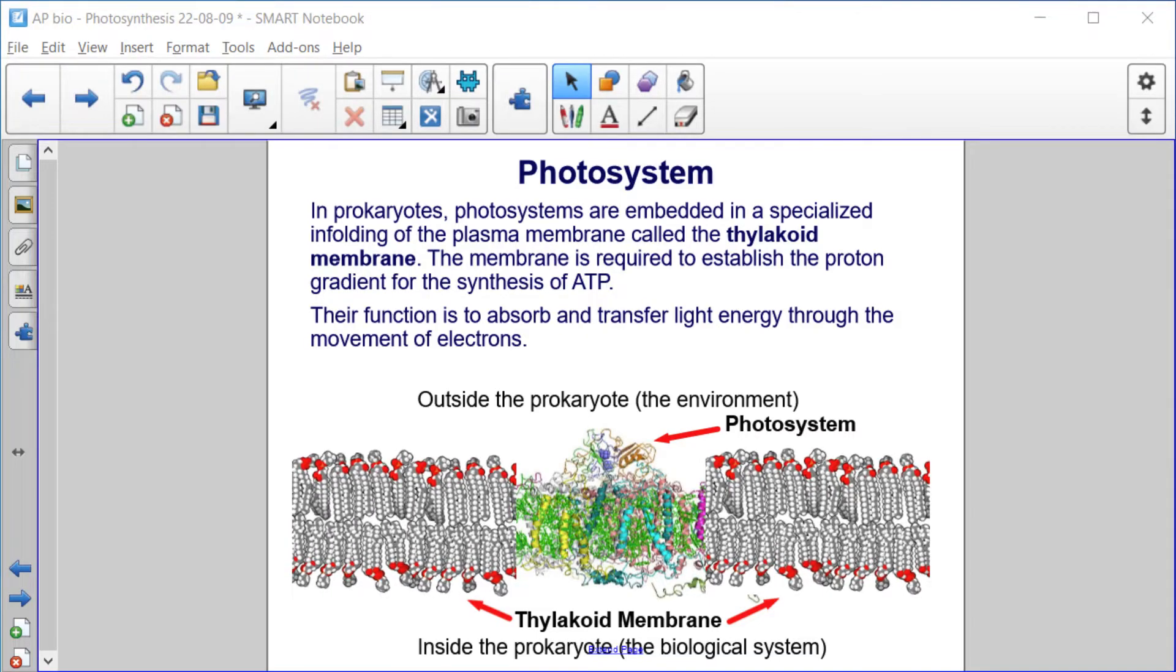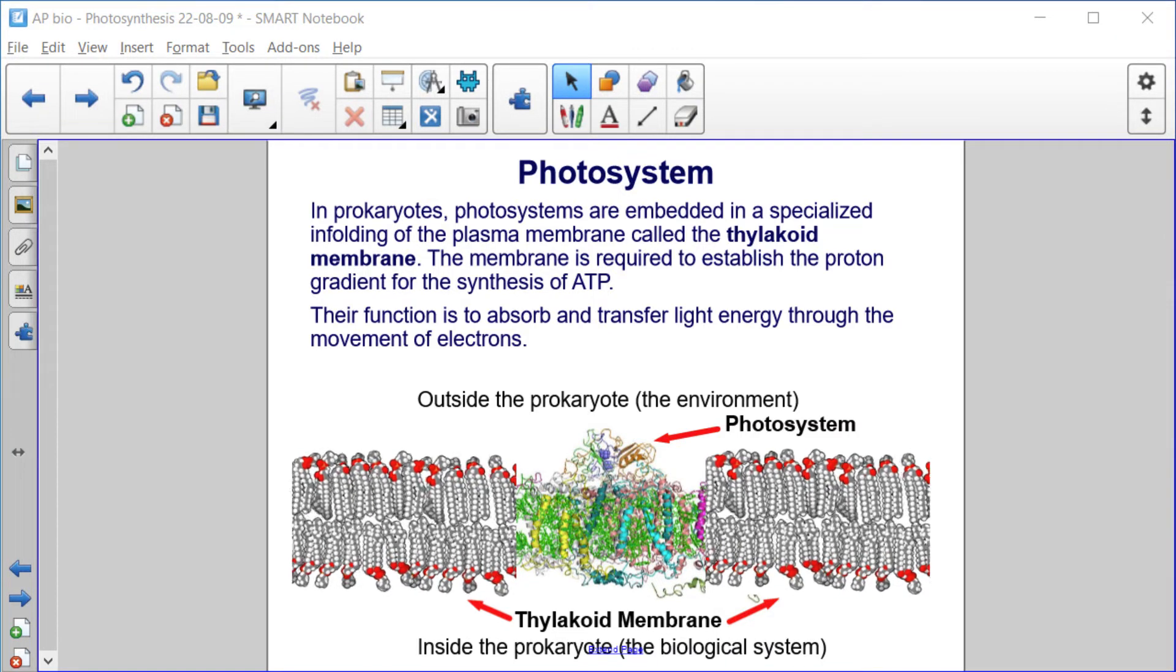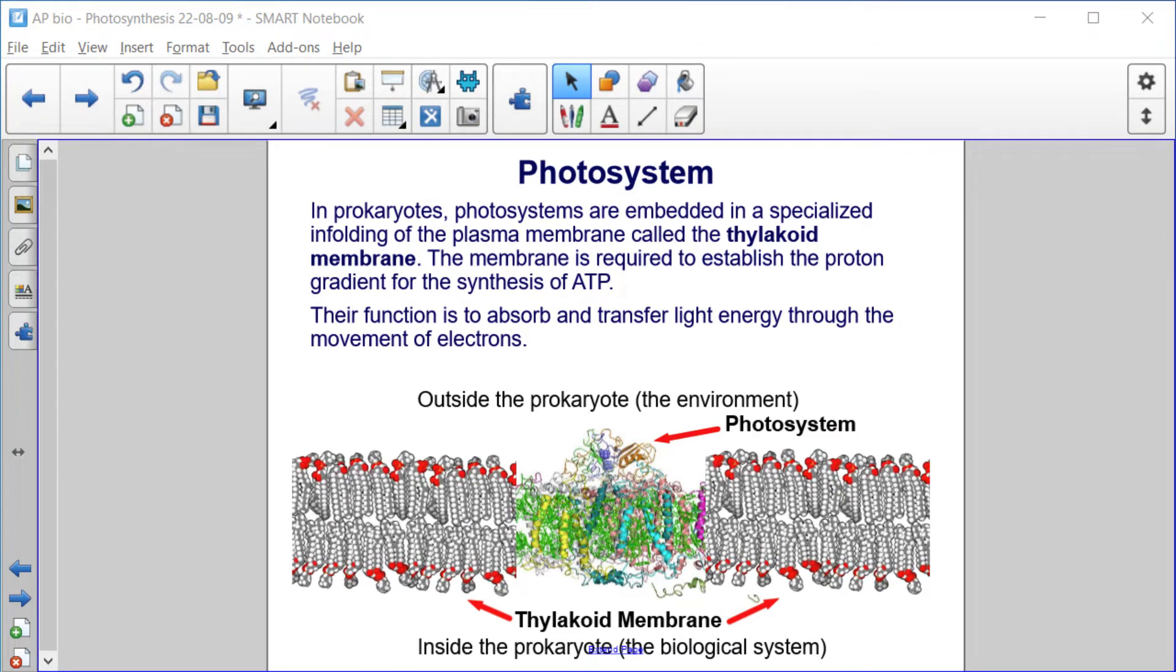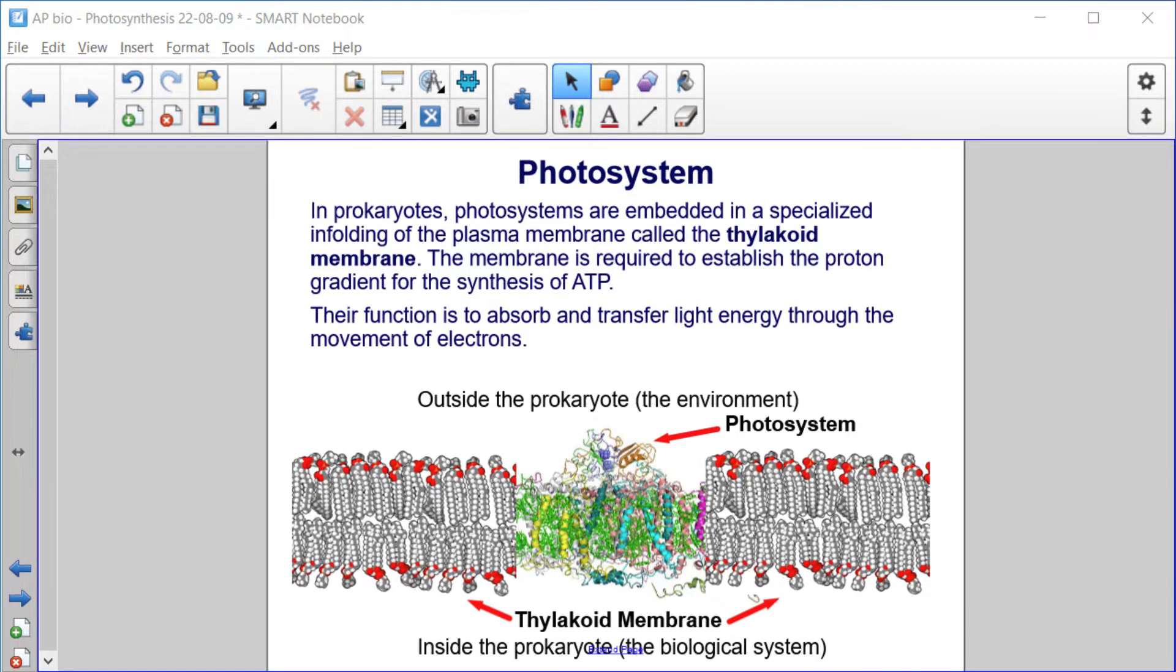In prokaryotes, photosystems are embedded in a specialized infolding of the plasma membrane called a thylakoid membrane. The membrane is required to establish the proton gradient for the synthesis of ATP. Their function is to absorb and transfer light energy through the movement of electrons.